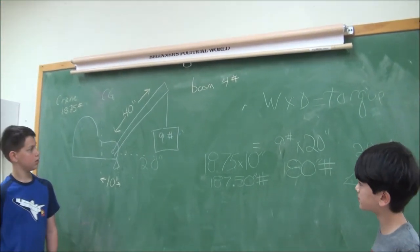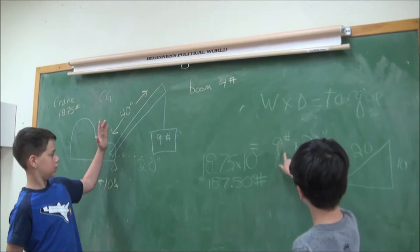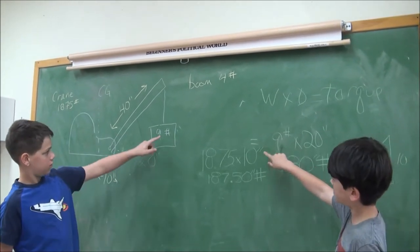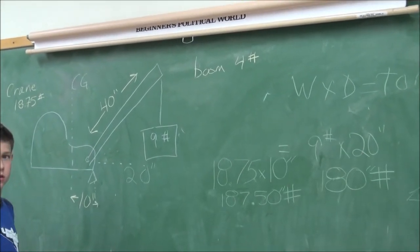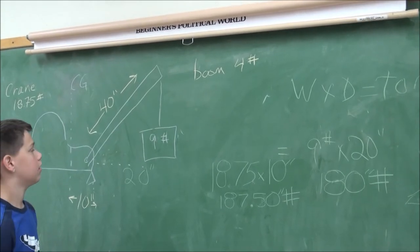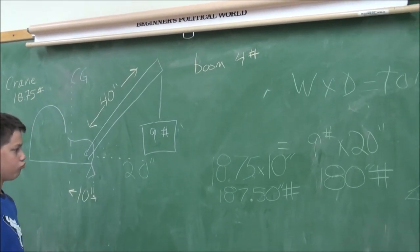Now show me the other side of the equation. The load is 9 pounds, two bricks. How do we find the distance from the center of gravity of the load to the pivot point?